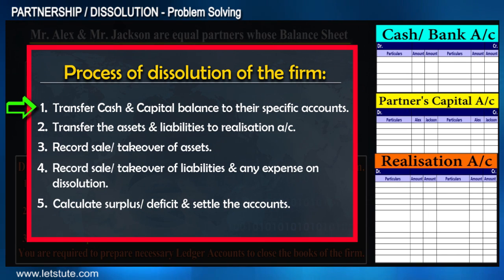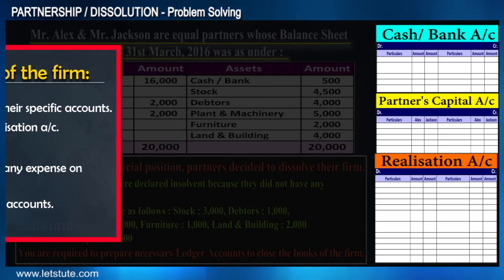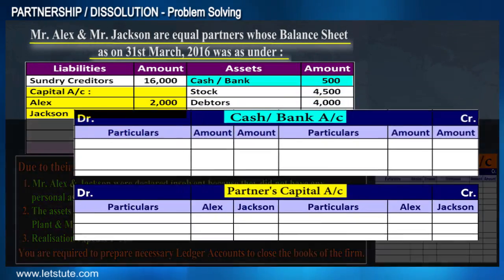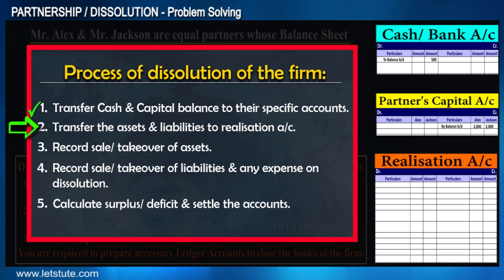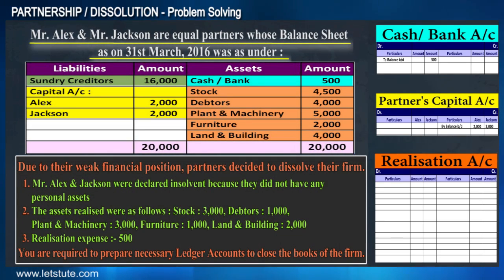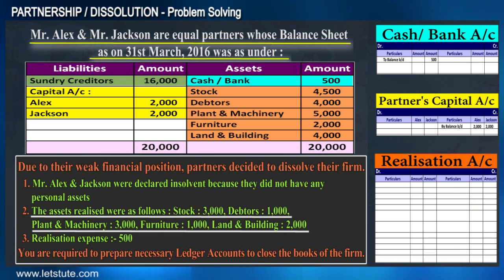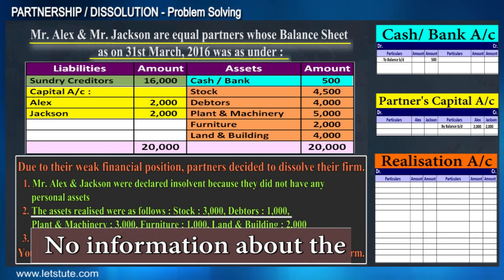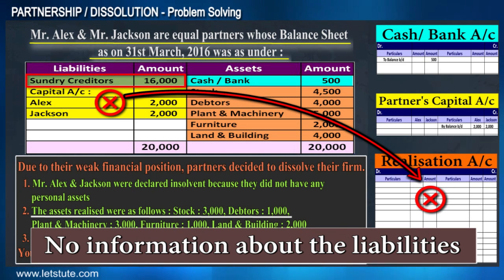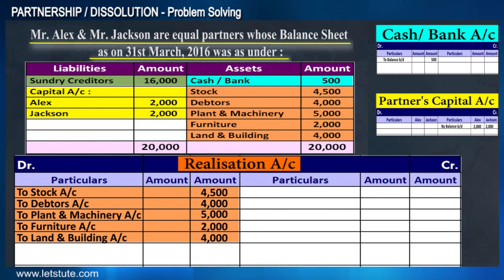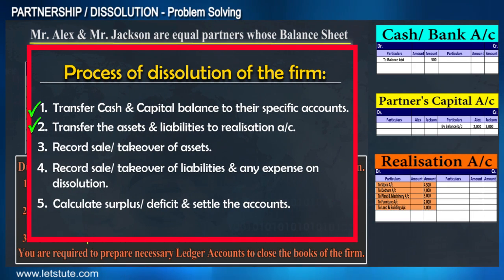According to Step 1, we need to transfer the cash and capital balances from the balance sheet. Our next step is to transfer all the assets and liabilities. However, since we only have information about realization on assets and no information about liabilities, creditors aren't paid off and will not be transferred to the realization account. So here we transfer only the assets on the debit side of the realization account, completing Step 2.